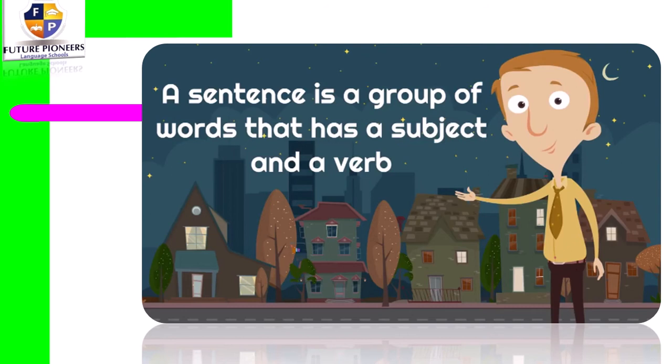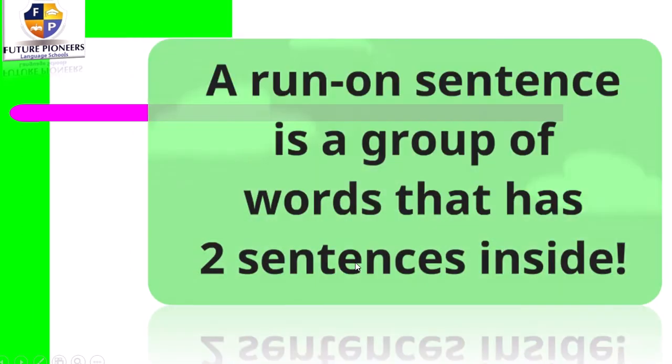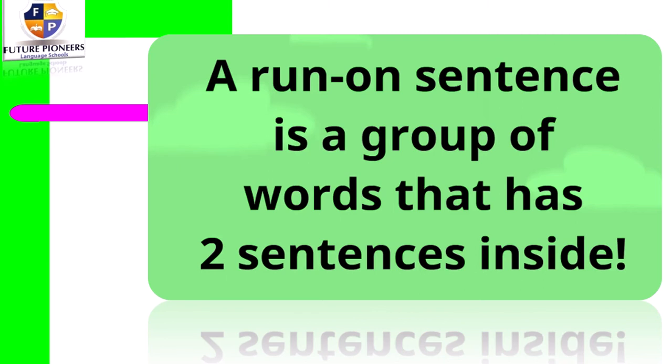First, let's look at the meaning of a sentence. A sentence is a group of words that has a subject and a verb. For example: 'The dog plays catch.' I can see here the subject 'dog' and I can see the verb 'plays.' So this is a sentence.